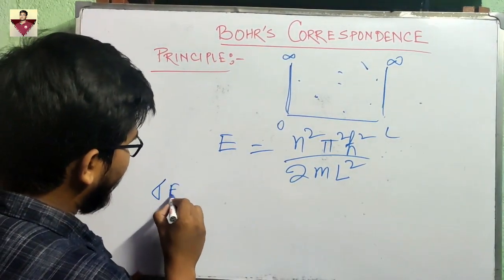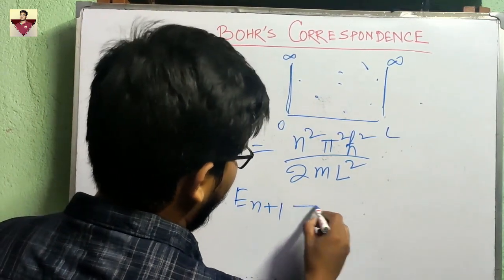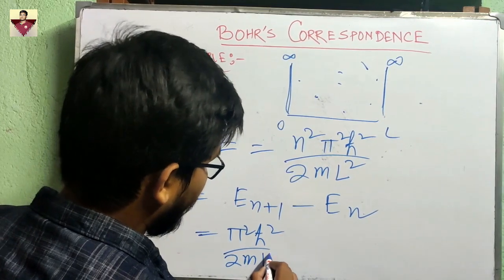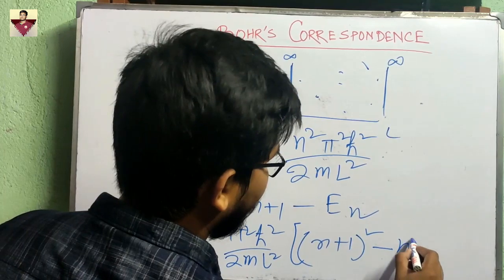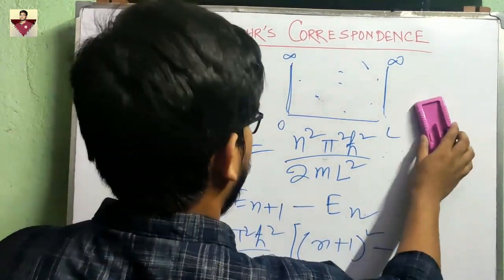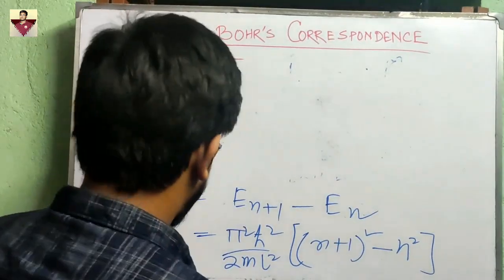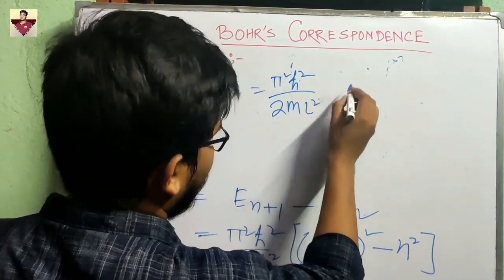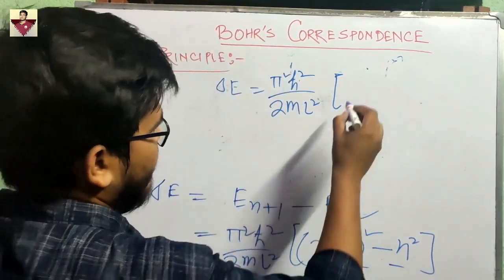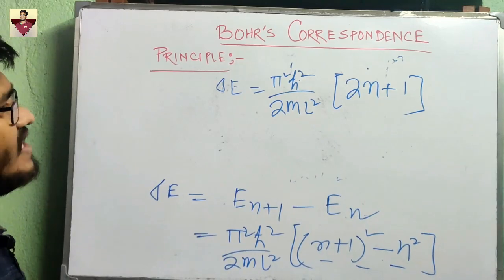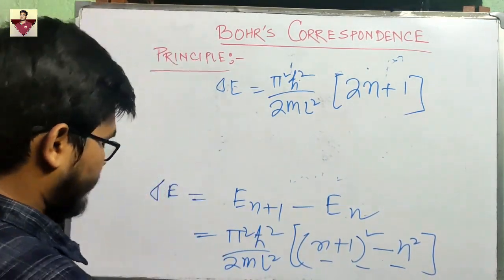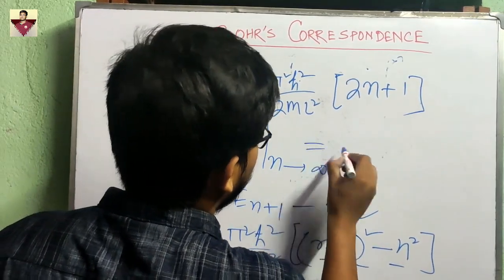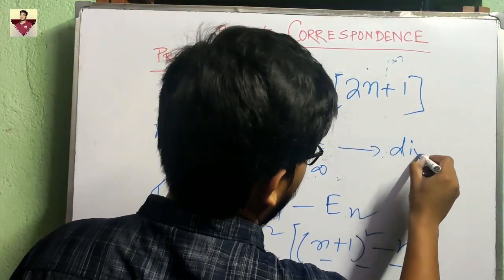Now let's check ΔE, the energy difference between the (n+1)th state and the nth state. Putting it into the equation, π²ℏ² / (2mL²) is common, and inside the bracket we get (n+1)² − n². Simplifying, ΔE = π²ℏ² / (2mL²) × (2n+1). So what happens when n becomes very large? For n → ∞, this ΔE diverges — it becomes infinite, not zero.